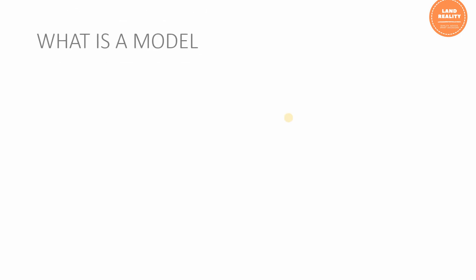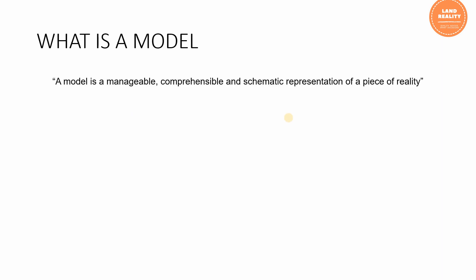A model is a manageable, comprehensible, schematic representation of a piece of reality. These keywords usually run through the definition: schematization — so it uses schematic representation — and then reality. A model should be able to be understood; comprehensibility is very key in modeling.